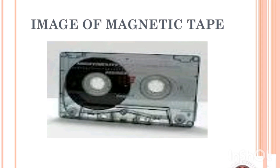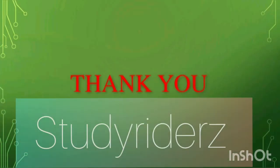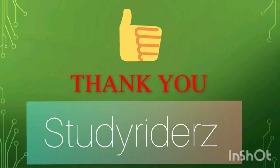Last is the magnetic tape. This magnetic tape is used to store large amounts of data. It is a medium of recording that consists of a thin tape coated with fine magnetic material. We can use the radio and put this cassette to play music. Before CDs, DVDs, Blu-rays, and pen drives came along, magnetic tapes were very popular and many users bought them. These are the secondary memory storage devices — I hope you all understand. If you have any doubts, please ask me. Thank you.